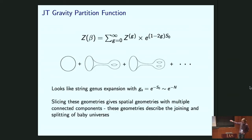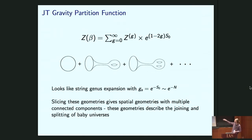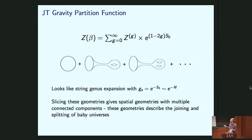Looking at this picture, the g=1 term adds one handle, g=2 adds two handles. This looks something like a string genus expansion where the genus counting parameter — like g_string — is e^{-S0}, which in SYK is like e^{-N}. We can see that slicing these geometries leads to spatial geometries with multiple disconnected components, so these Euclidean geometries describe the joining and splitting of baby universes.